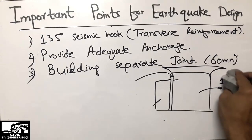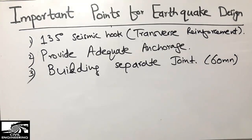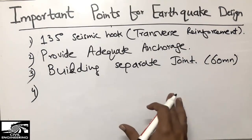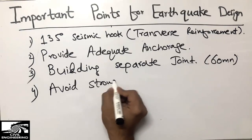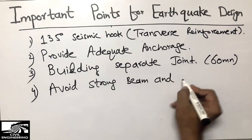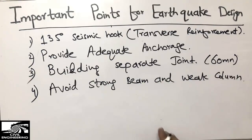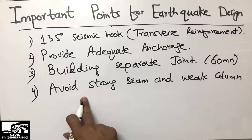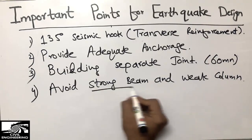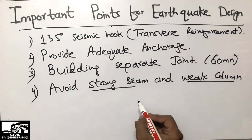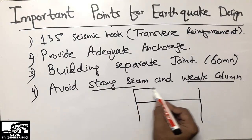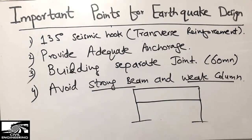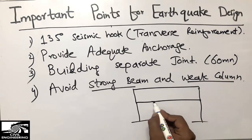The fourth and very important point is the strong column–weak beam concept. You should not design a strong beam with a weak column. For example, in a two-story building with beams and columns at each floor, the beam should not be stronger than the column.